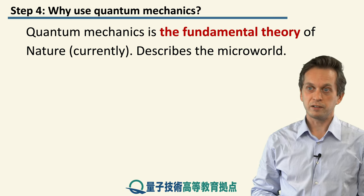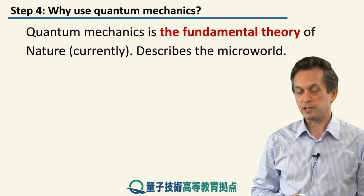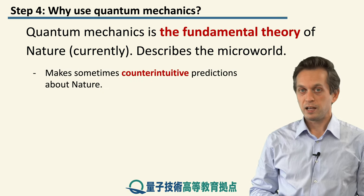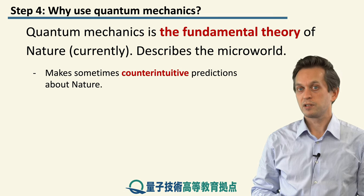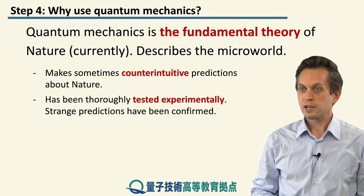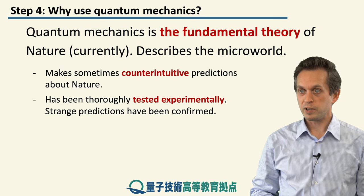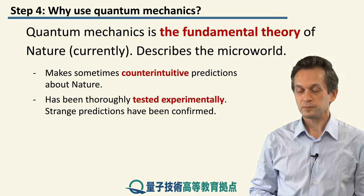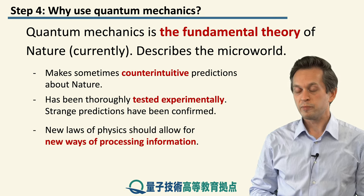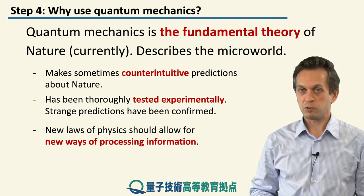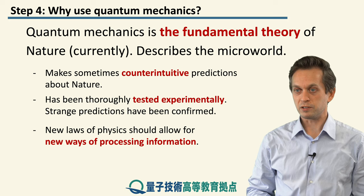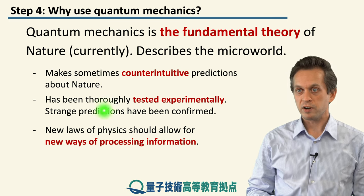Well, for one, quantum mechanics is the fundamental theory of nature. Currently, as we understand it, it describes the microworld where classical mechanics does not apply. It makes some counterintuitive predictions, which, however, despite the counterintuitiveness, have been tested very thoroughly over many decades, and so far the theory has always been proven correct. Furthermore, considering new laws of physics and applying them to information processing and communication could potentially lead to new ways of processing and communicating this information. So these reasons in themselves are very fundamental.